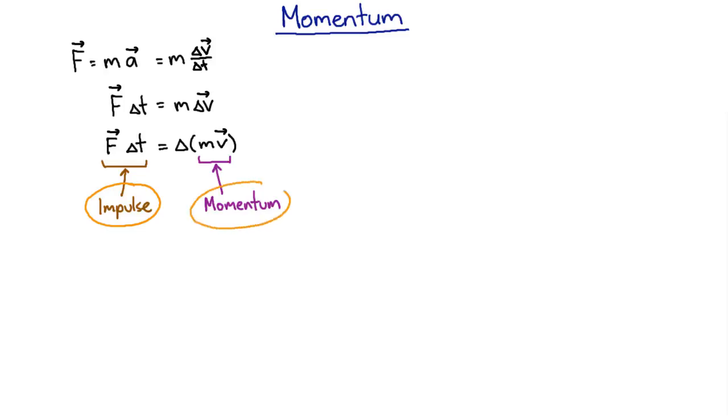And the momentum is basically just how hard something is to stop. If something has a really large momentum, you need either a really large force or a really long time to try and stop it. And momentum turns out to be a really important, very fundamental quantity, and it's usually given the symbol P.